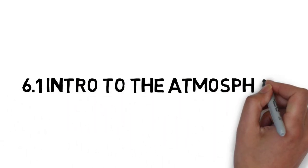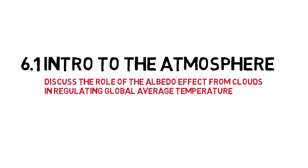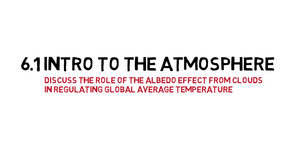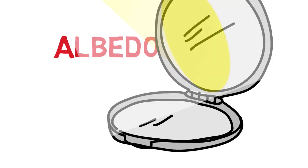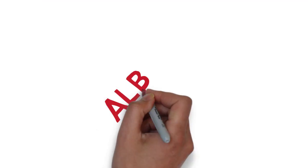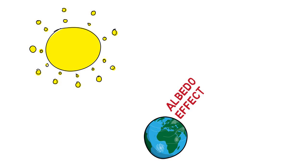Albedo is a measure of the reflectivity of a surface. The albedo effect, when applied to the Earth, is a measure of how much of the sun's energy is reflected back into space.